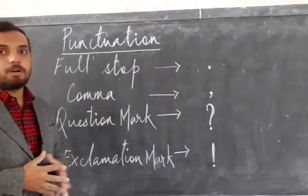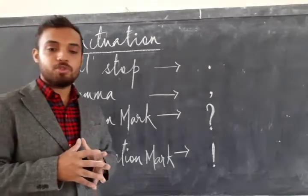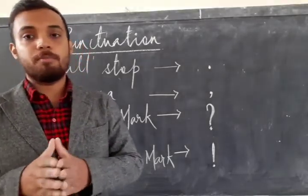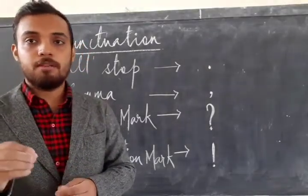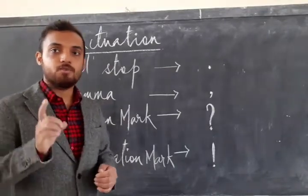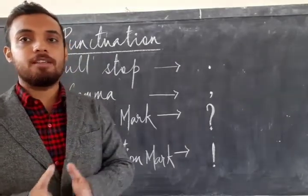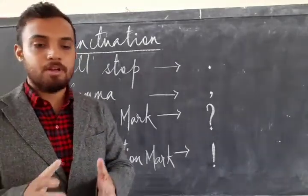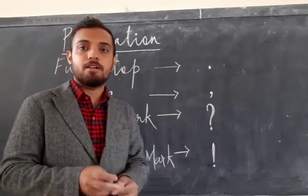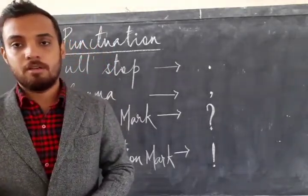The second one is comma. Why do we use comma? Comma is used for a natural pause, meaning we have to stop for a little while. That is one use. And the other use of comma is to separate the items in a list.